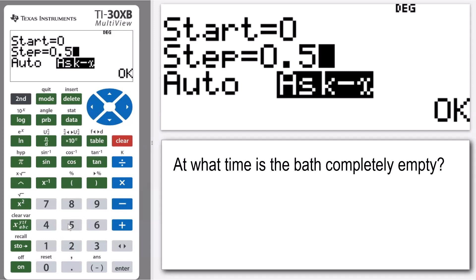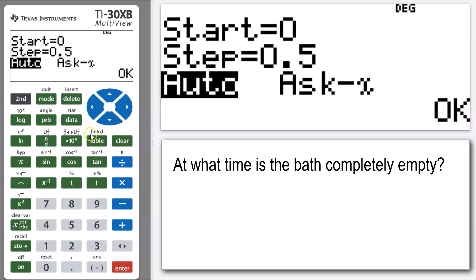And the reason why I'm doing that is just to get maybe a bit of a better idea at what time the bath might empty. And then I'm not going to use my Ask X now. I want to see my whole spectrum of values, so I'm going to use the auto to bring up my whole table, pressing okay.